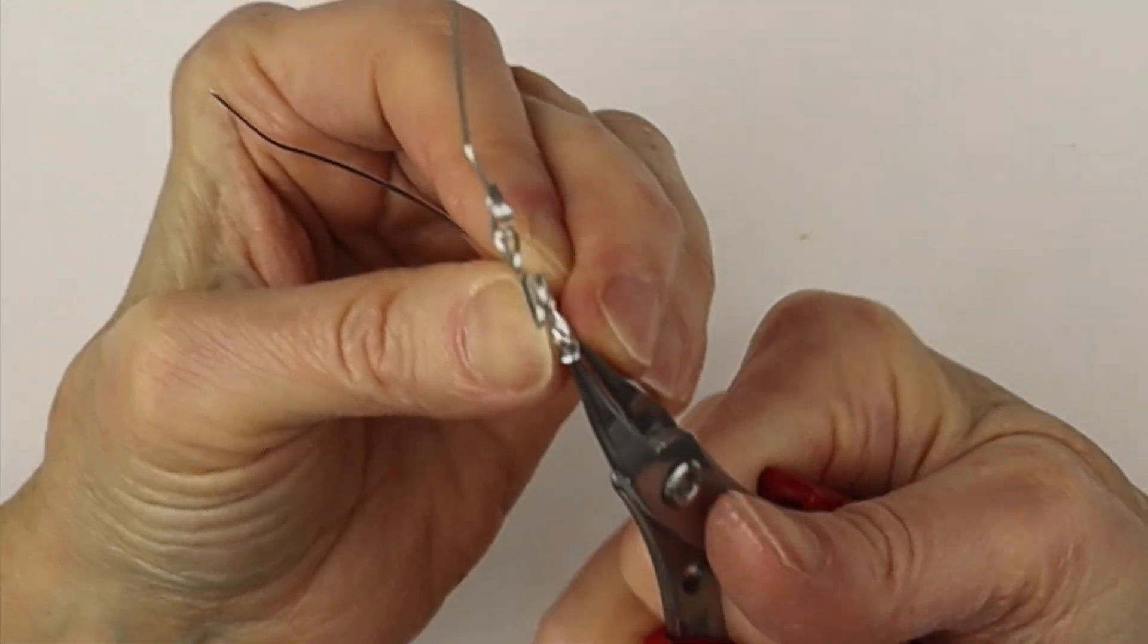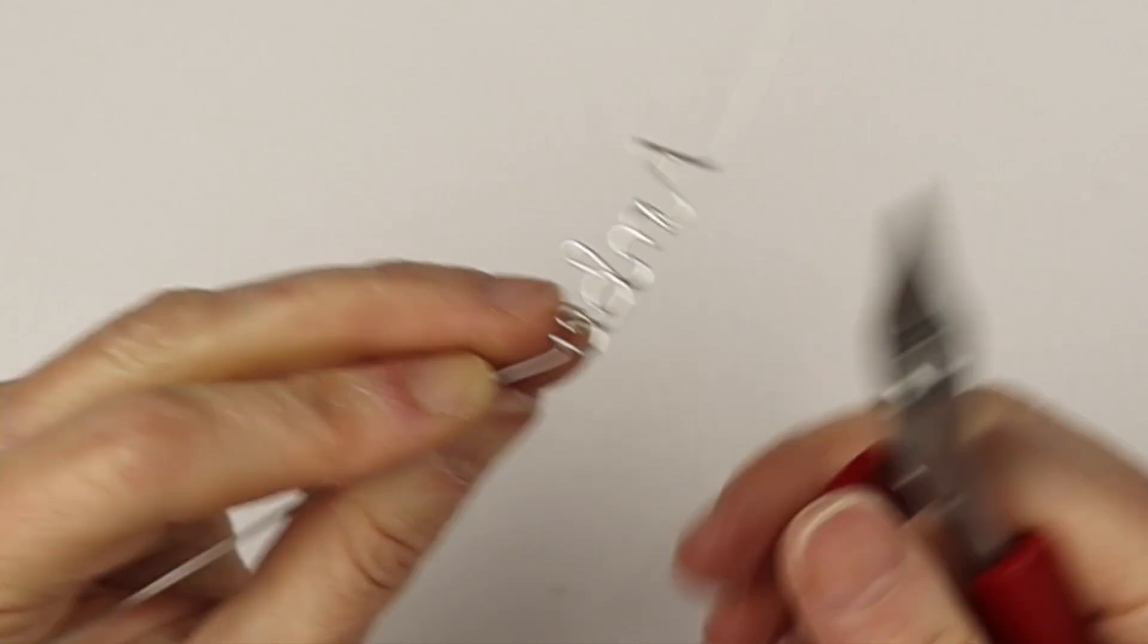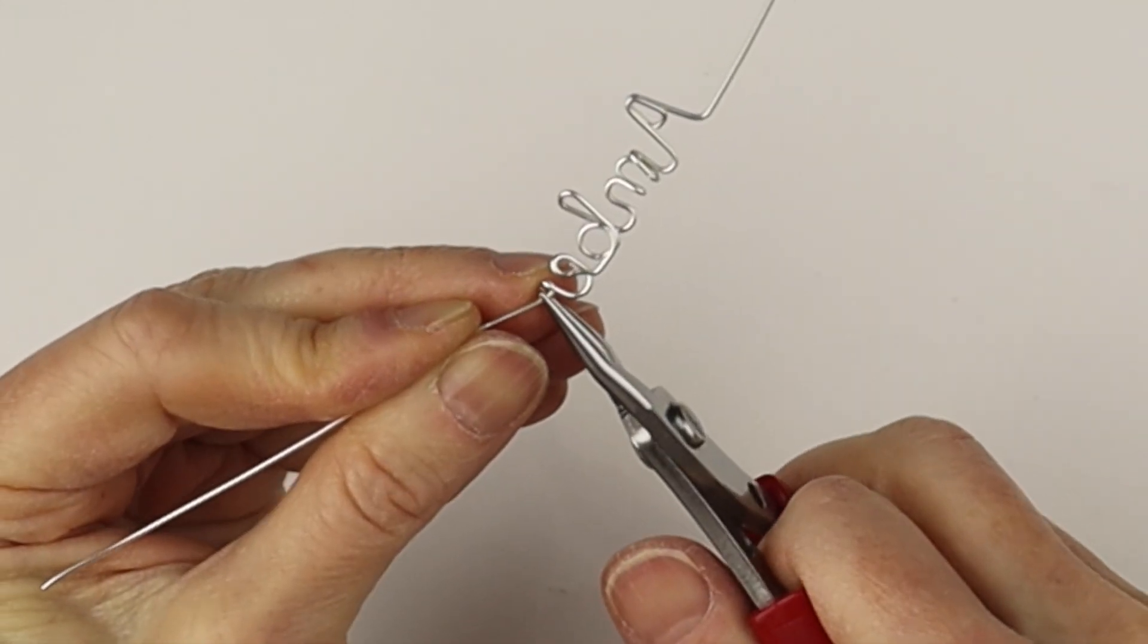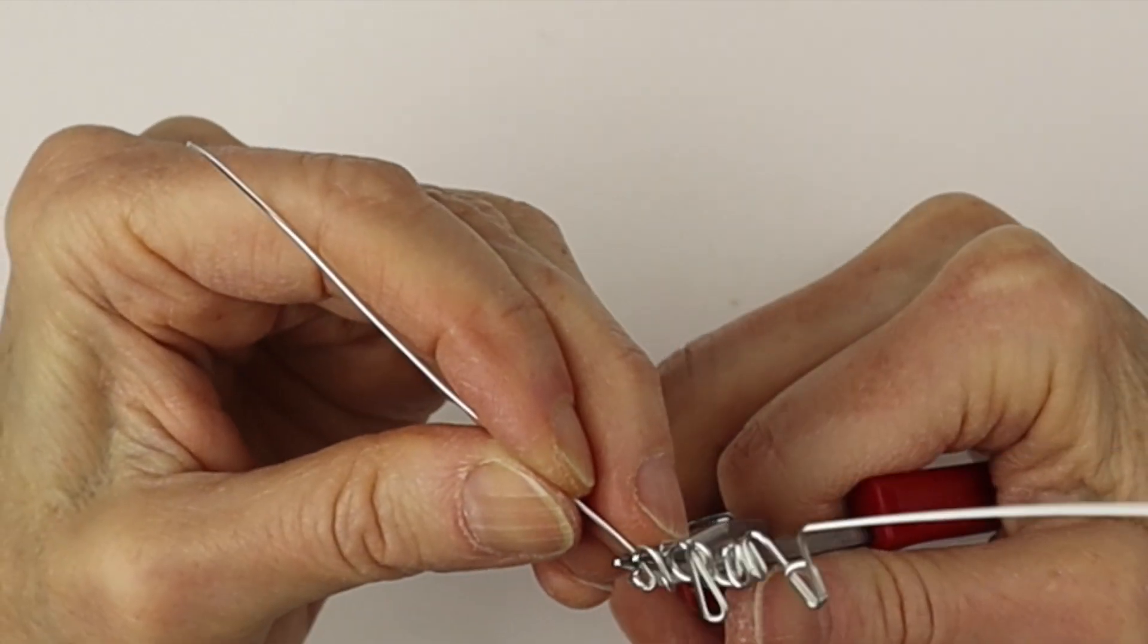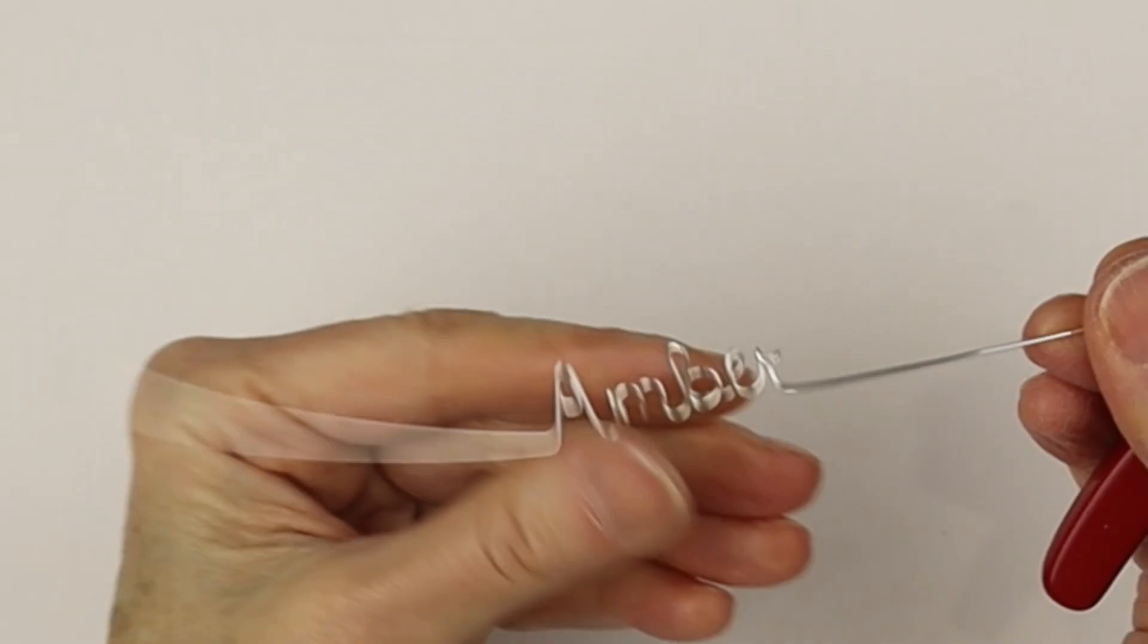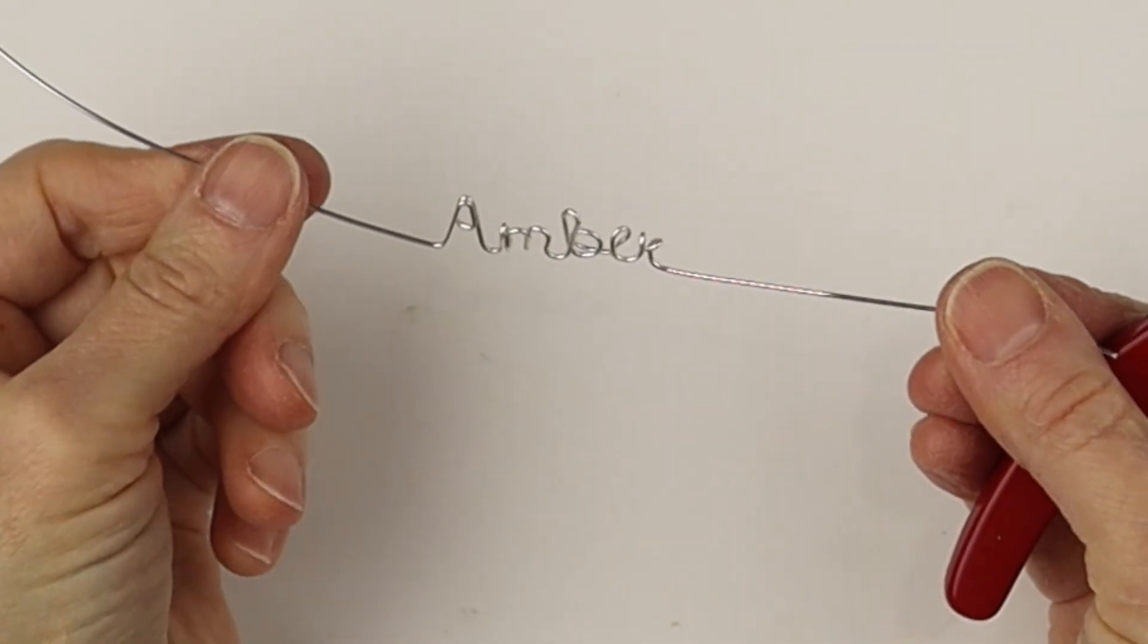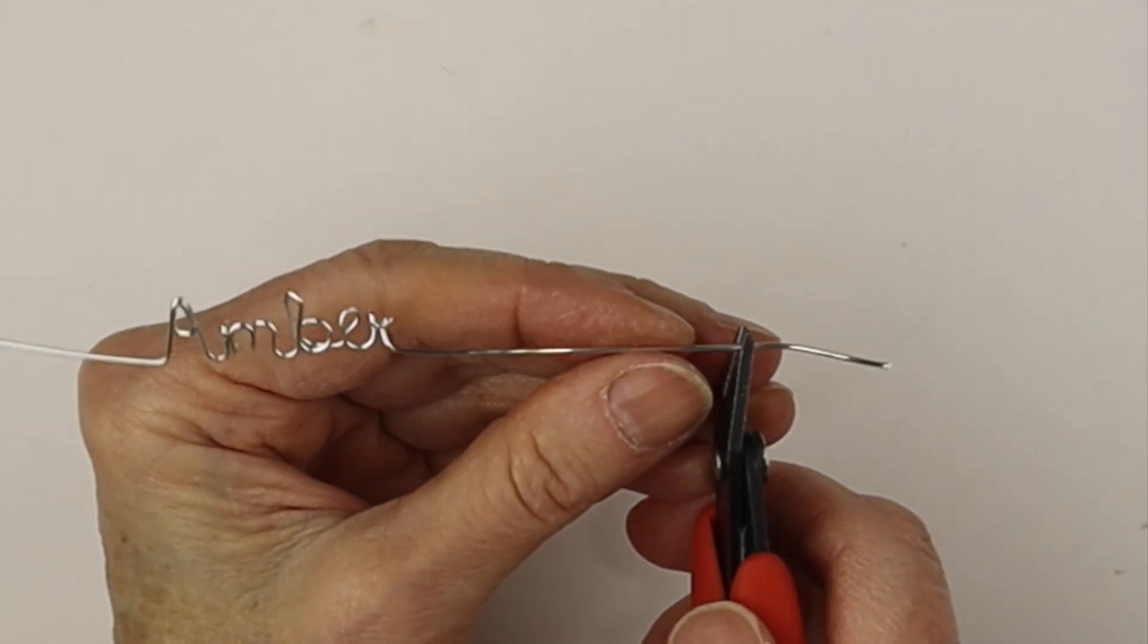And then we're going to bend the wire to the front to do the cursive R. And bring it to the back and down and out. So there we have the name. And we can make sure it's even. Adjust it as you need. I'm going to clip the end to about two to three inches.